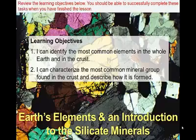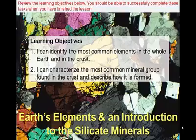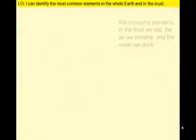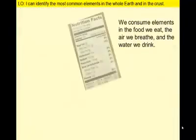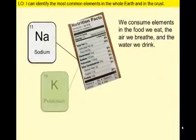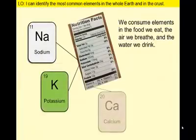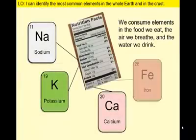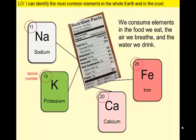We know that rocks are made of minerals and minerals are composed of elements. Elements are the primary ingredients of all earth materials. We consume elements in the food we eat, the air we breathe, and the water we drink. Elements can't be separated into simpler substances by chemical means.